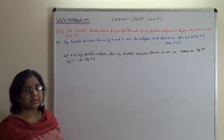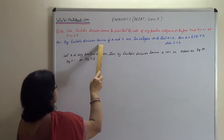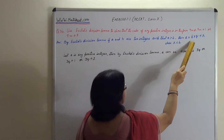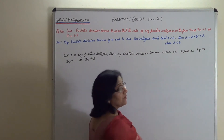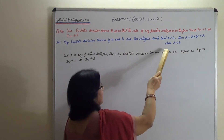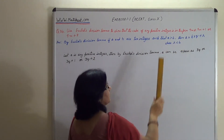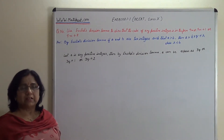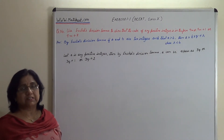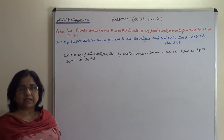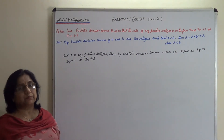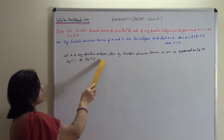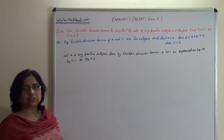First, let us recall Euclid's division lemma. By Euclid's division lemma, if a and b are two integers such that a is greater than b, then a equals b into q plus r, where q and r are two unique numbers and r is smaller than b. Let a be any positive integer, meaning a can take any value from 0 to infinity.